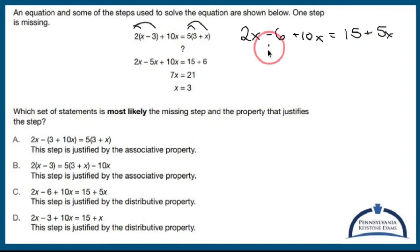Alright, so I guess that guy would be that guy. Which set of statements is most likely the missing step and the property that justifies the step?